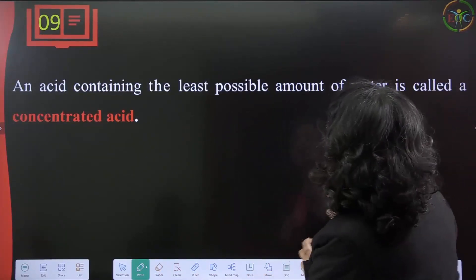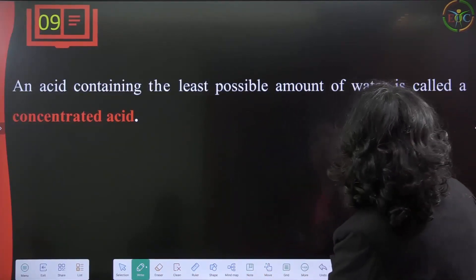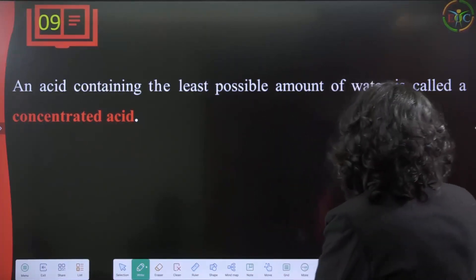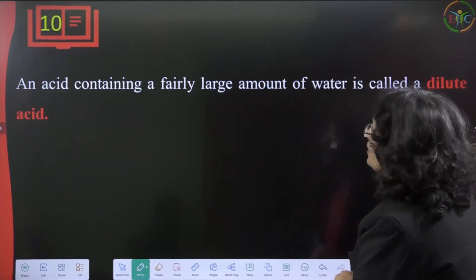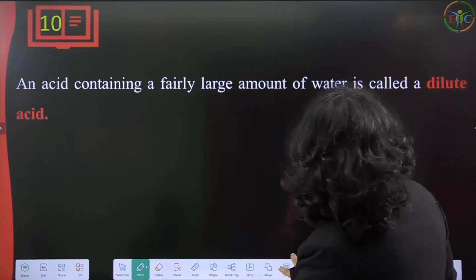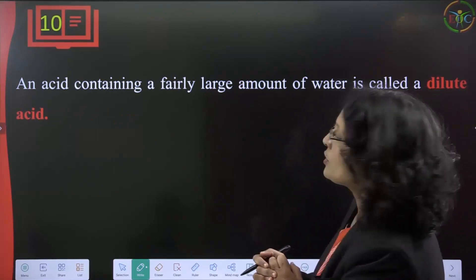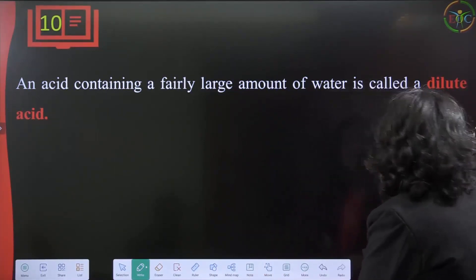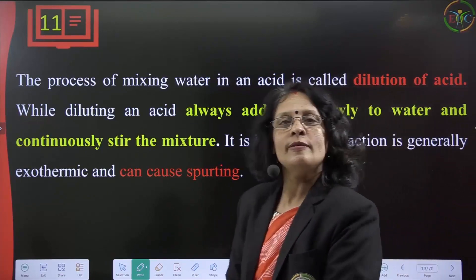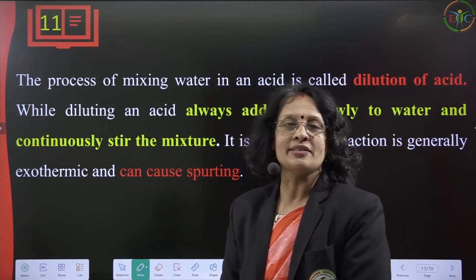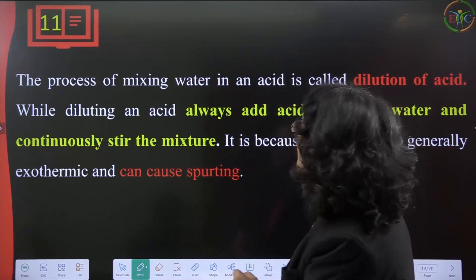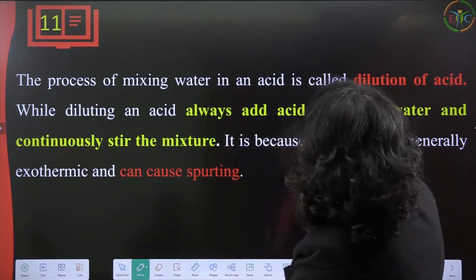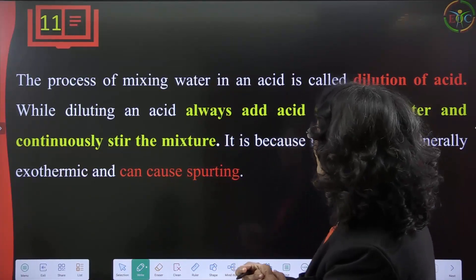An acid containing the least possible amount of water is called a concentrated acid. An acid containing a large amount of water is called a dilute acid. Adding a lot of water to a concentrated acid to make it dilute is called dilution of acid.